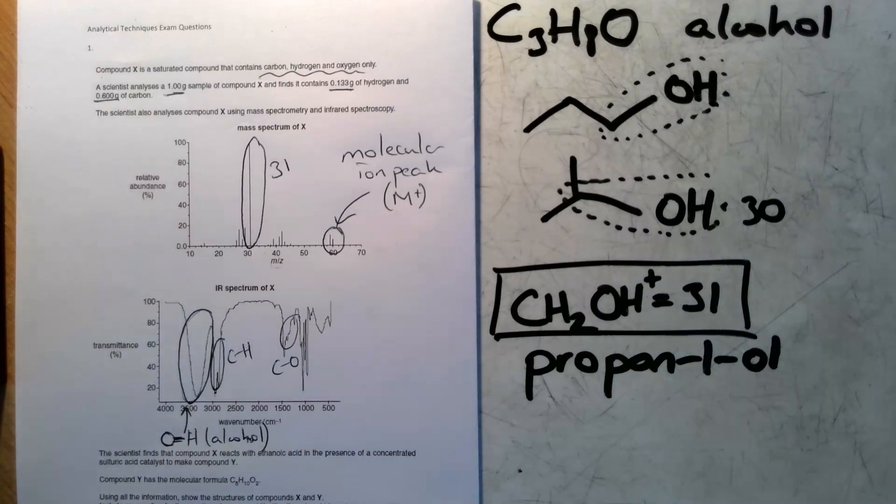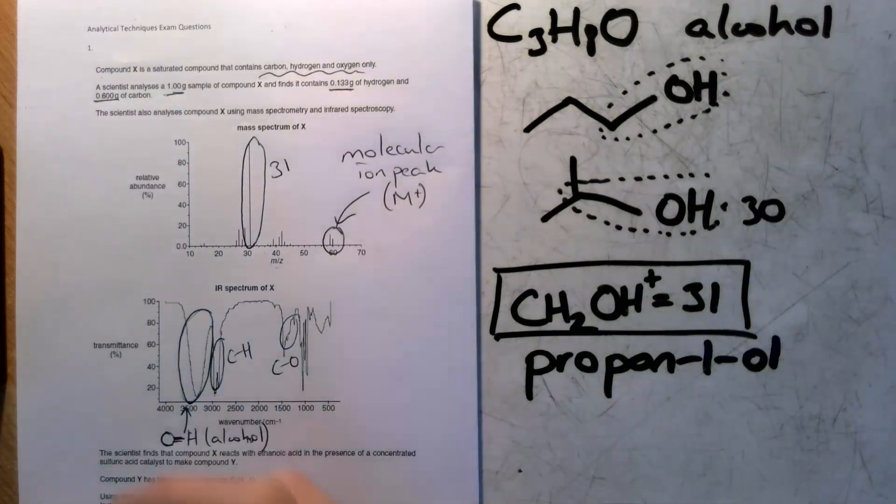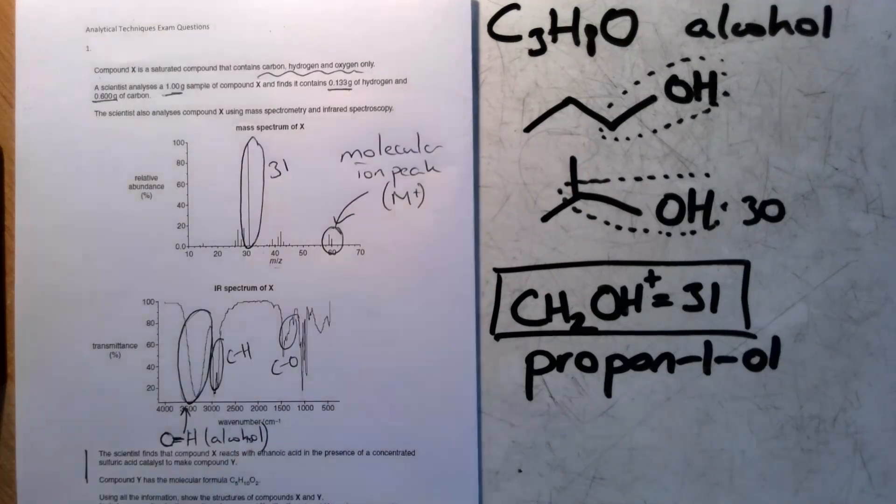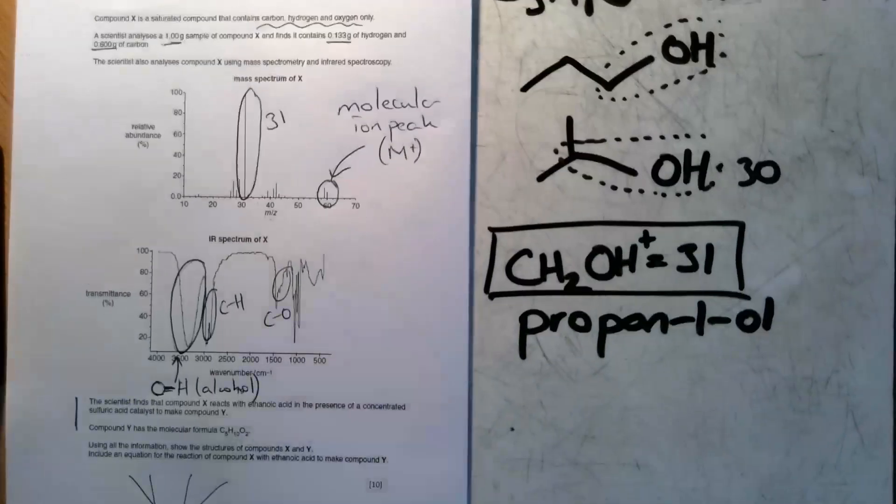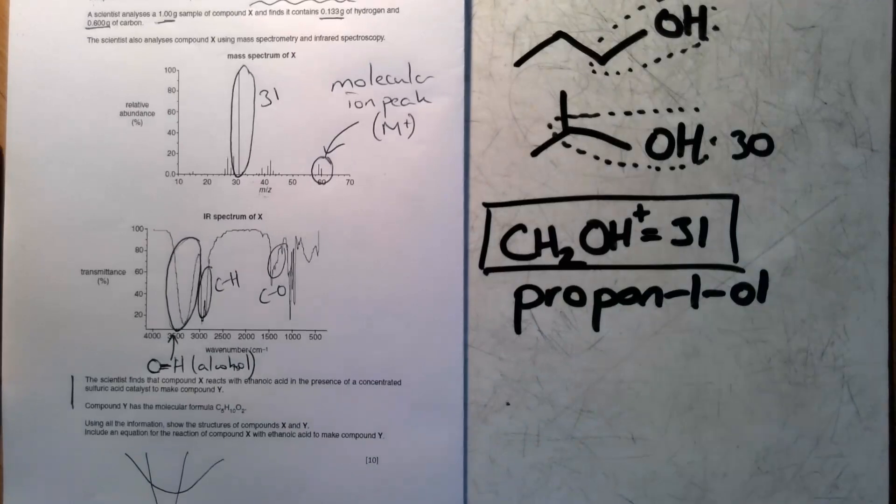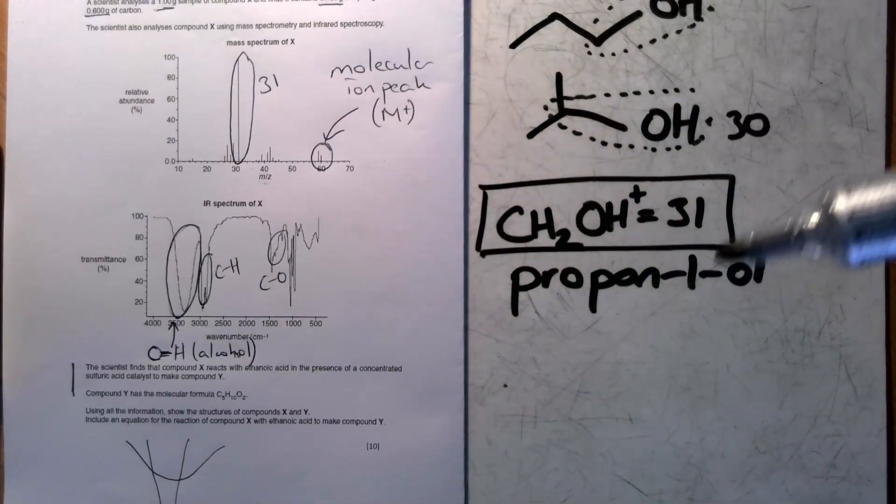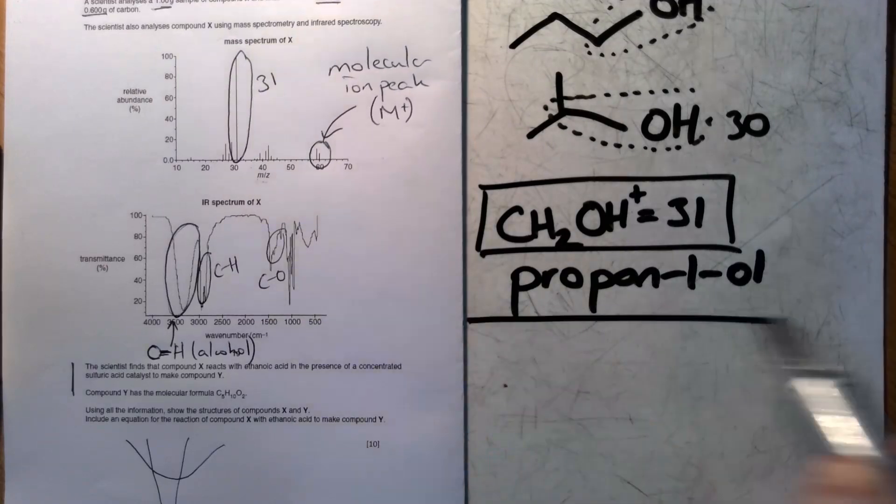I think we've successfully identified that the compound X is propan-1-ol. If we look at other information they've given us, they've told us this reacts with ethanoic acid. This reacts with ethanoic acid in the presence of concentrated sulfuric acid to make compound Y which has a molecular formula below. Now this is an esterification. We haven't looked at esterifications, so don't worry too much about this bit.